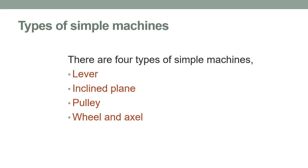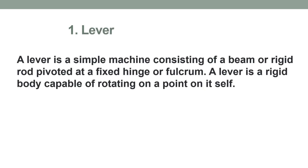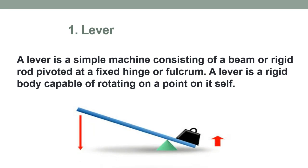First we will move to the lever. Lever is a simple machine consisting of a beam or rigid rod pivoted at a fixed fulcrum. Observe the given diagram clearly. Here you can see that the force is applied downwards to lift the object upwards. This change of direction of force is the main advantage of using a lever for lifting an object.